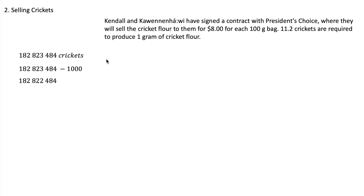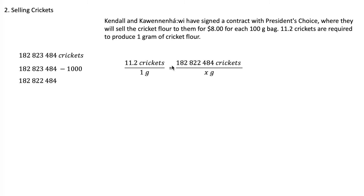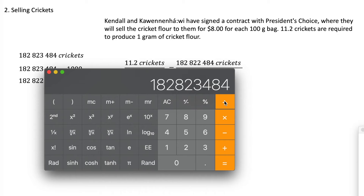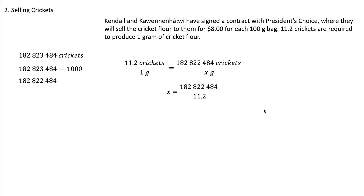Let's figure out how many grams we have by dividing by 11.2. We can set this up as a ratio: 11.2 crickets makes 1 gram, and 182,822,484 crickets makes X grams. Cross-multiplying to get X alone, we get X equals 182,822,484 divided by 11.2, giving us 16,323,436 grams of cricket flour.